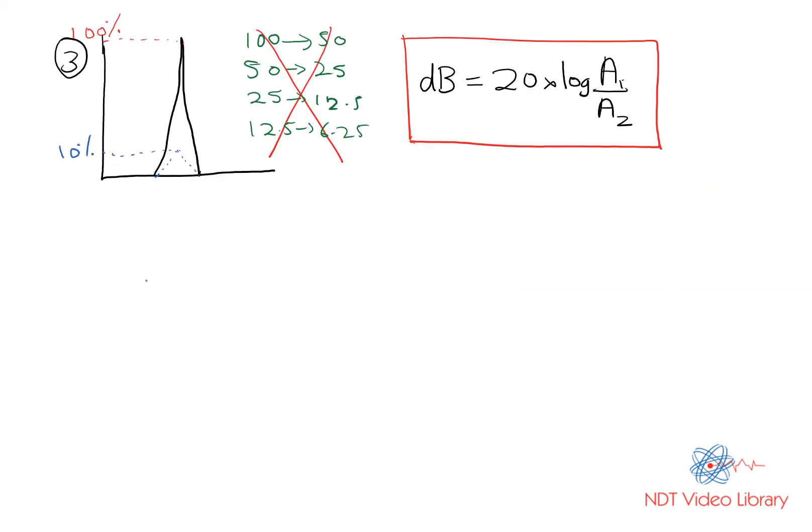In this case it becomes 20 times the log of the higher number, 100 percent, divided by the lower number, 10 percent. The zeros get cancelled. Log of 10 is 1, so 20 times 1 is 20. So 20 decibels is the difference.